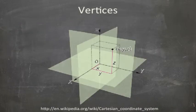In this slide, you can see the vertices X, Y, and Z on the Cartesian coordinate. One of the planes is X and Y, the other plane is on Z and Y, and the last plane is on Z and X.